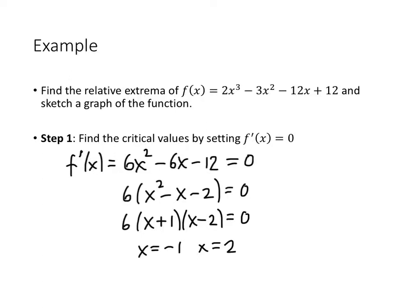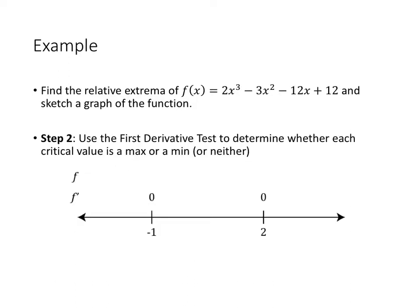Now we need to test those points using the first derivative test to find out whether we actually have a maximum or minimum there. One way to do this is by drawing a sign diagram. We place our two critical values, −1 and 2, on a number line, and we know the derivative is 0 at those points. What we need to know for the first derivative test is whether the first derivative is changing sign at those points: is it positive or negative to the left of −1, between −1 and 2, and greater than 2? The derivative can only change sign at these critical points.